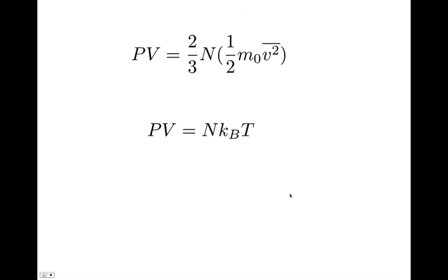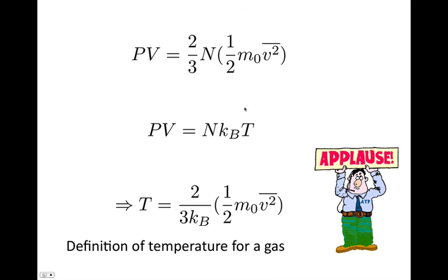What we were trying to do was get a relationship between temperature. To do that, we relate this equation to the ideal gas law. Equating them, NkbT = (2/3)N × ½m₀V̄². The N's cancel, and rearranging to get T, we finally get T = (2/3kb) × ½m₀V̄², where this is the average kinetic energy of the gas. So this is our definition of temperature of a gas — temperature is given by (2/3kb) times the average kinetic energy of the particles that make up the gas.